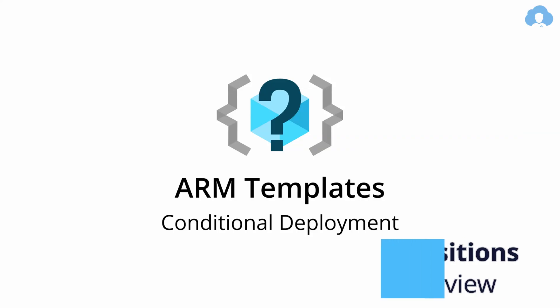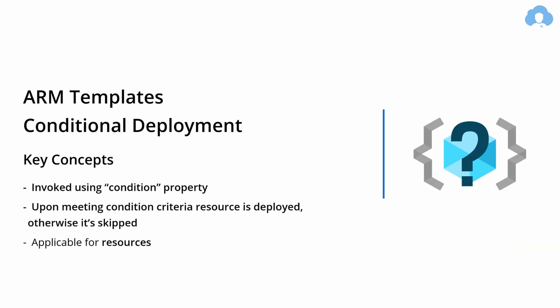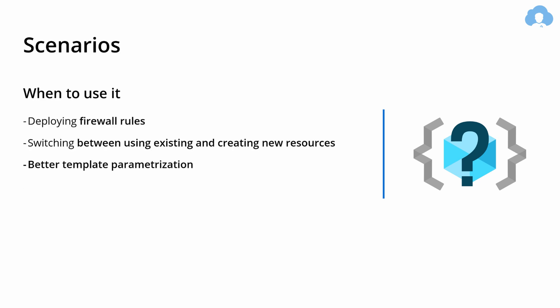The principles of how conditional deployment works are fairly simple. It's always invoked using the condition property, and this property is only applicable for resource blocks. Whenever you meet the criteria defined in a condition property, this resource will be deployed, otherwise it will be skipped. Typical scenarios include deployment of firewall rules on your servers, switching between existing and creating new resources, or in general better template parametrization.